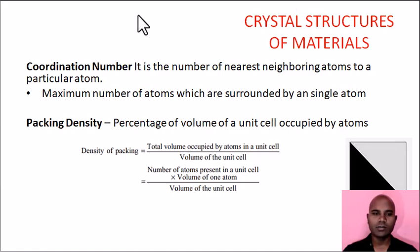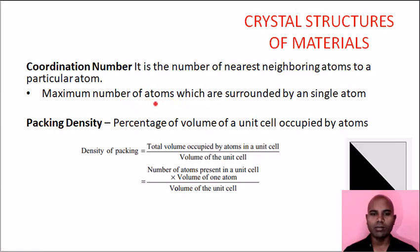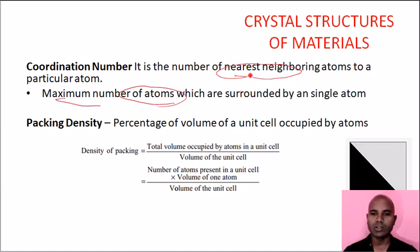Definitions first. Coordination number: it is the maximum number of atoms surrounded by a single atom. That is the coordination number — the number of nearest neighbouring atoms.